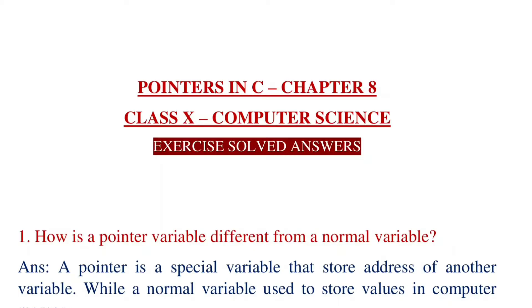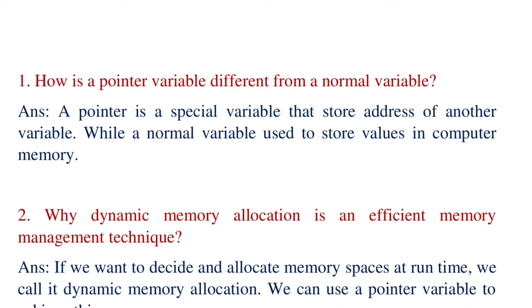The first question is how is a pointer variable different from a normal variable. As I have already explained, a pointer variable stores the address of another variable, but a normal variable stores values directly. For example, if we write x equals 5, then that variable will store 5. If I declare a pointer variable, it can store the address of some other variable.